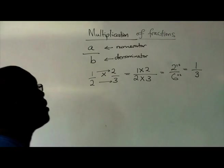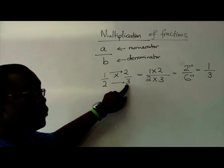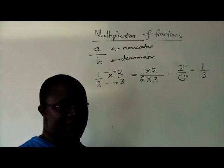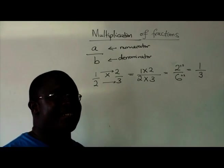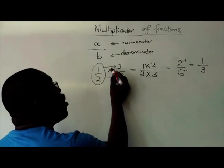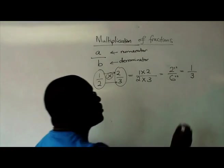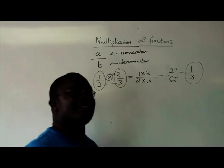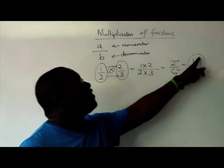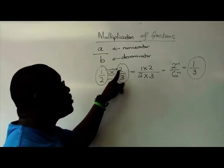So we divided by 2 and 2 and we got 1 out of 3. So that means that 1 over 2 times 2 out of 3 will give us 1 over 3. Reading it in English, you would say half of 2 thirds is equal to 1 third.